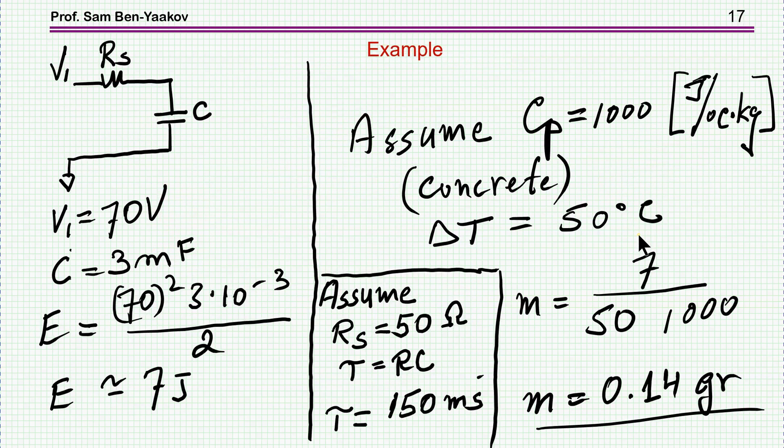So let's take an example now. Here we have a case in which we have 70 volts, a capacitor which is 3 millifarad, and therefore the energy that we have to handle is 7 Joule approximately. Now if we assume that the specific heat capacity is 1000 Joule per centigrade per kilogram, this is by the way for concrete, and the material usually will be ceramic which is sort of like that.